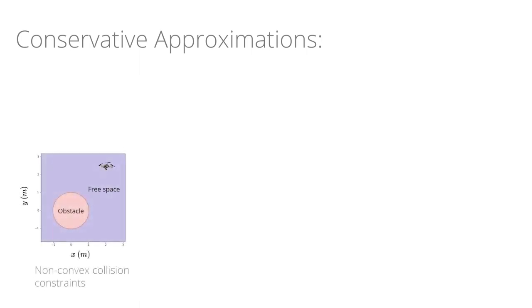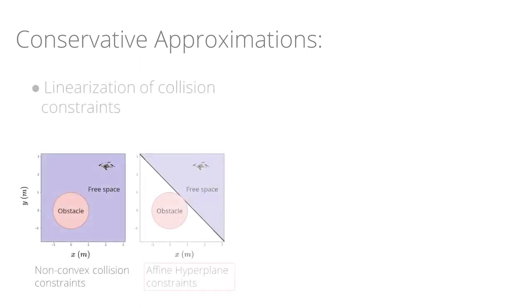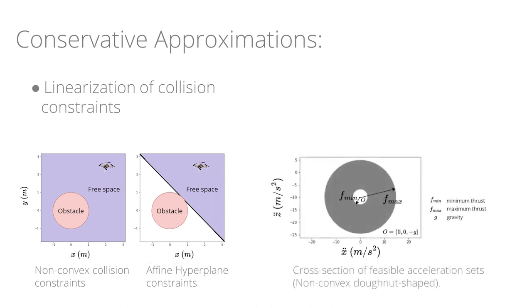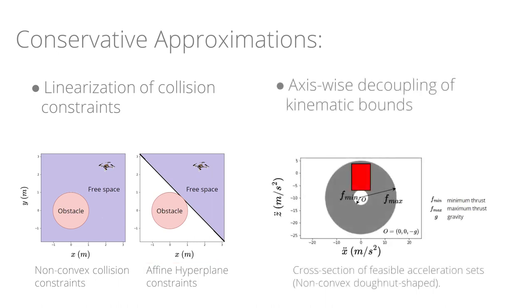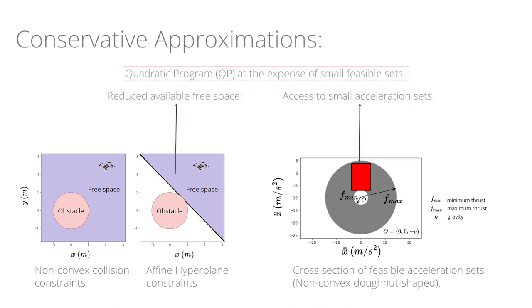First, linearization of non-convex collision constraints to obtain affine hyperplane constraints. Second, axis-wise decoupling of kinematic bounds to obtain affine box constraints. Such approximations are made to obtain a quadratic program at the expense of small feasible sets.